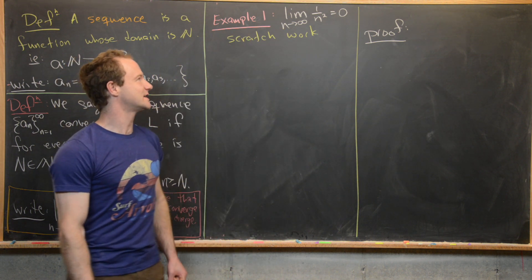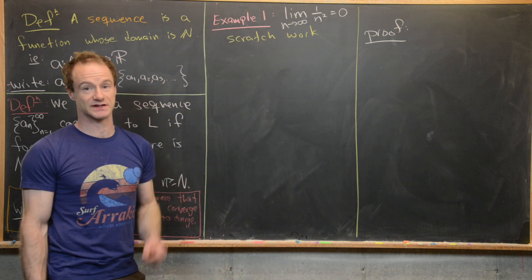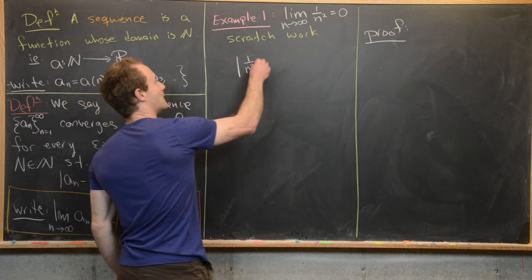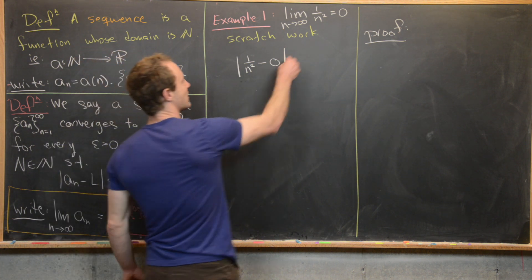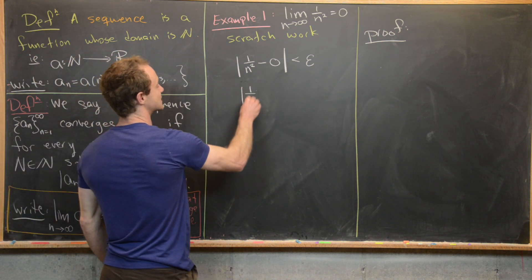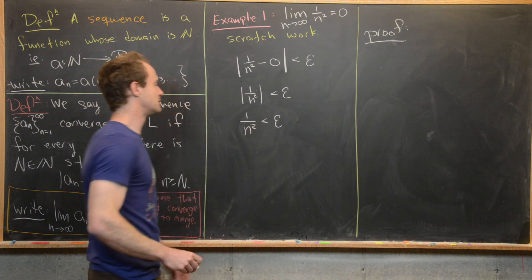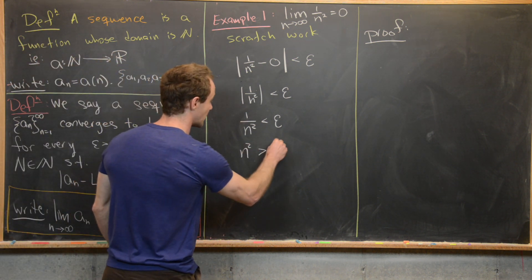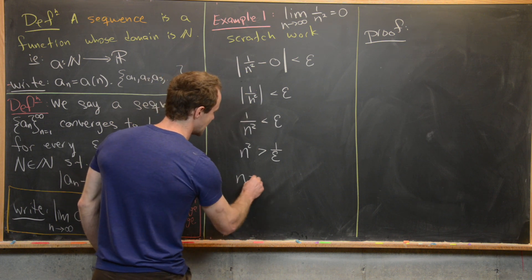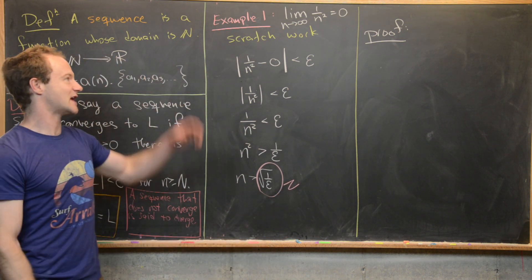For our first example, we look at the limit as n goes to infinity of 1/n², which we expect to equal 0. In the scratch work, we consider the absolute value of 1/n² minus 0 being less than epsilon. This simplifies to 1/n² being less than epsilon, since n² is always positive. Reciprocating both sides gives n² greater than 1/epsilon, and taking the square root gives n greater than the square root of 1/epsilon. So the square root of 1/epsilon will be our capital N.